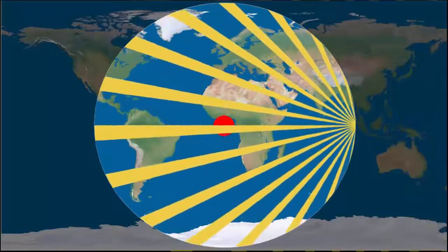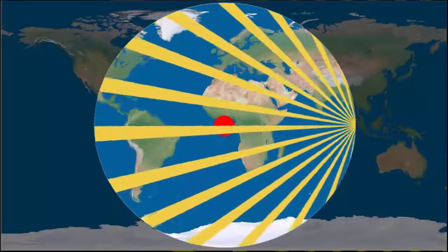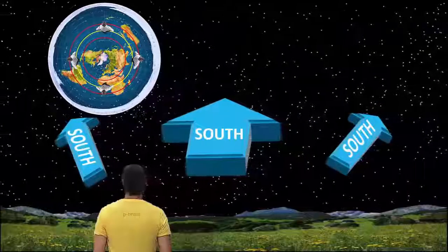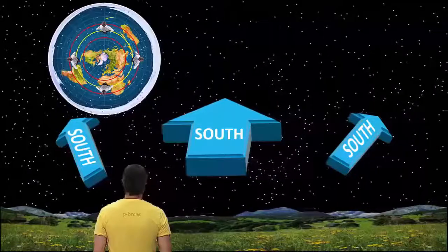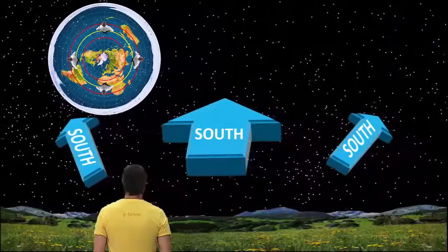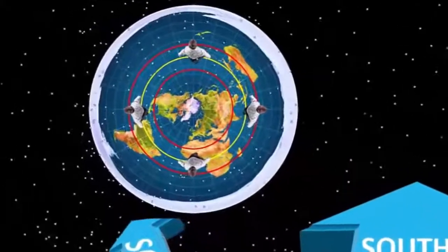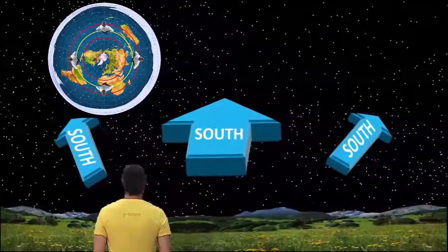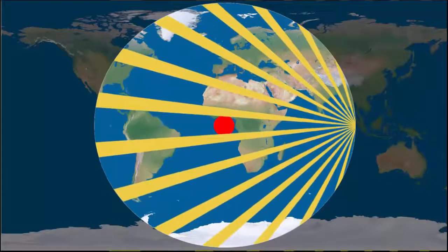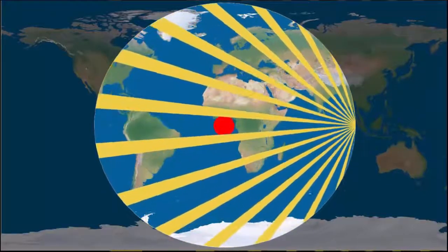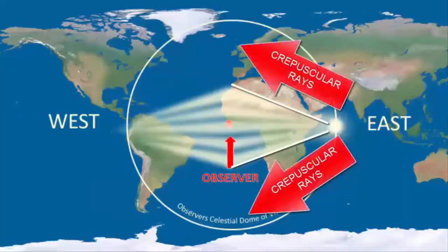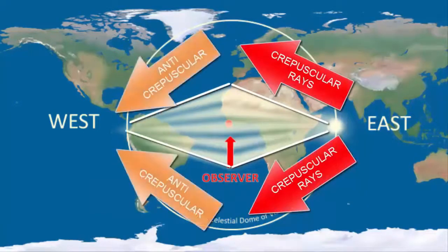If crepuscular rays spread out from the horizon and continued to spread out on the other side of us, then yes, you would expect to see the stars circling counterclockwise when you look south from the equator — moving left to right, staying parallel to the ground, as though one big dish with its center at Polaris. But that's not what we see. The crepuscular rays become anti-crepuscular rays and they converge, not continue to spread. So the precedent is set that the stars do a similar thing.